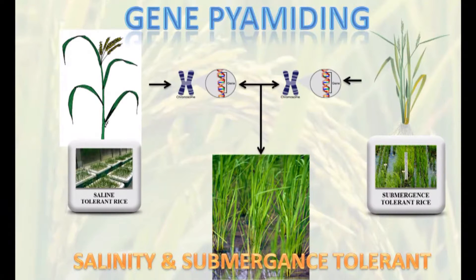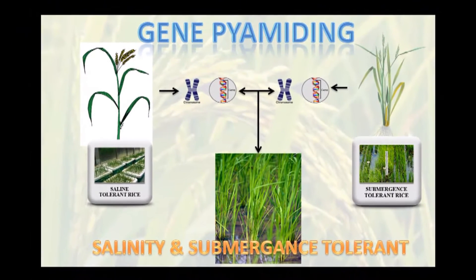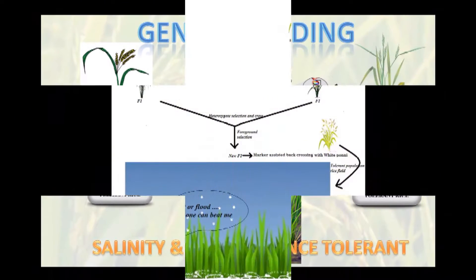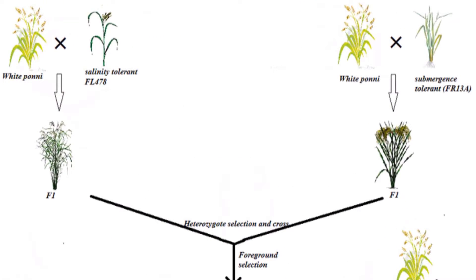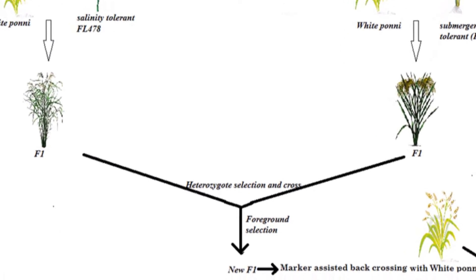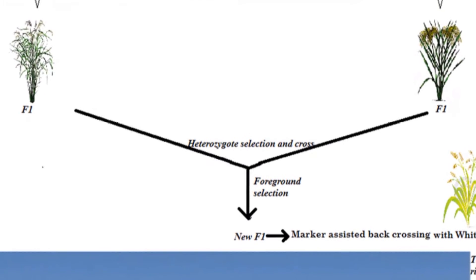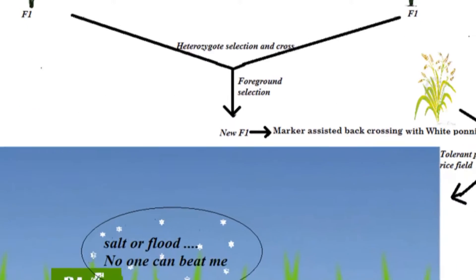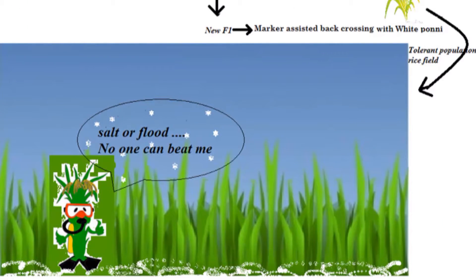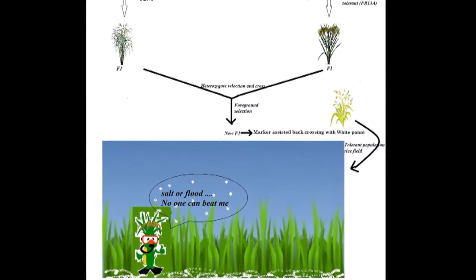Gene pyramiding is one of the best methods to assemble multiple genes into a desired genotype. This overall process involves generation of true F1 hybrids between White Pony with FL478 and White Pony with FR13A, crossing them to permit two major QTLs, and marker assisted selection for positive plants harboring both QTLs, followed by marker assisted backcrossing with positive plants with White Pony and selection of superior plants, and then screening in various conditions.